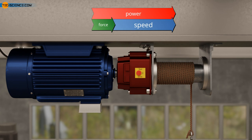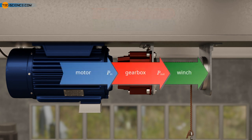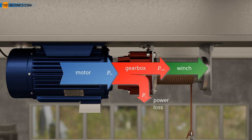Note: gearboxes do not change the mechanical power, but only the ratio between force and speed for a given power. This means either greater force at lower speed or more speed at lower force. In a perfect case, all the drive power delivered by the motor is transmitted to the output shaft of the gearbox. In reality, however, power losses occur in the gearbox due to friction, and these are taken into account by an efficiency factor.